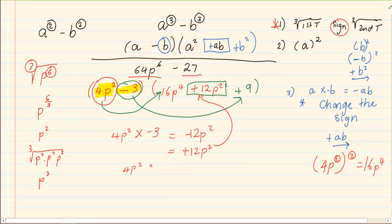Now we have completely factorized. 4p squared minus 3 into 16p to the power of 4 plus 12p squared plus 9.